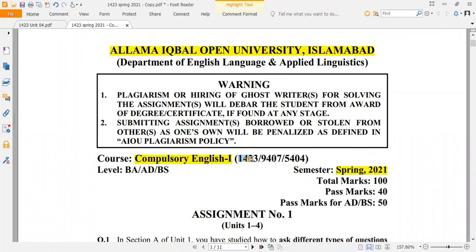It's created for three codes: 1423, 9407, and 5404. Three levels are available for BA, Associate degree AD, and BS. The total marks are 100. 40 marks are available for BA and others are available for 50. Assignment number 1 is solved. This is based on unit number 1 to 4. Today we are going to do question 5.